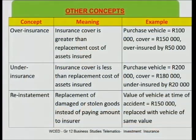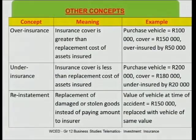Reinstatement is about the replacement of damaged or stolen goods instead of paying an amount to the insured. So if I had a Samsung phone and anything happened to it — if it was damaged or stolen — instead of being given the money to go and buy another phone, the insurance company would give me back exactly the same kind of phone. So if you lose your Samsung 2, you can't claim a Samsung 7 — you will be given the same one.